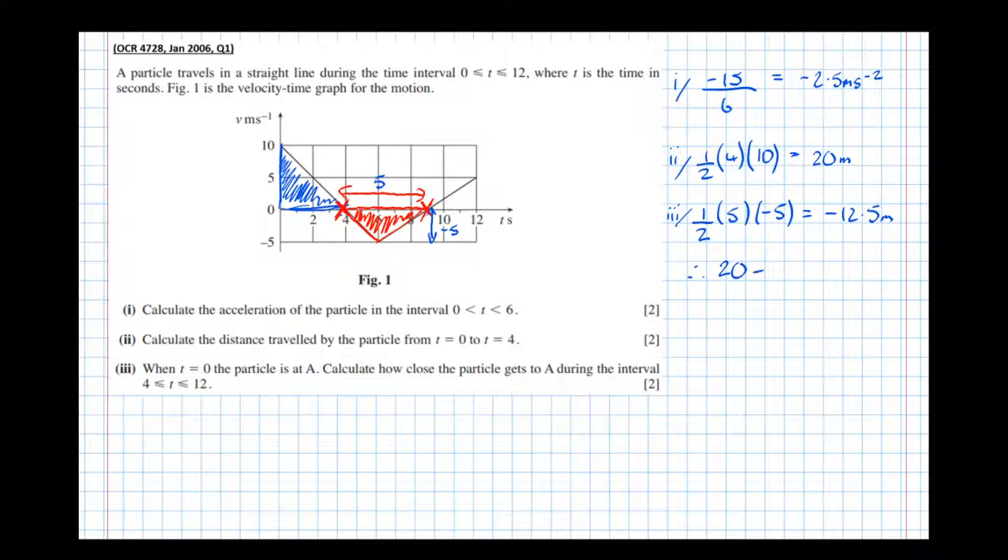Therefore 20 take 12.5 is 7.5 meters. And we're done because the particle starts moving away from A again after this point.